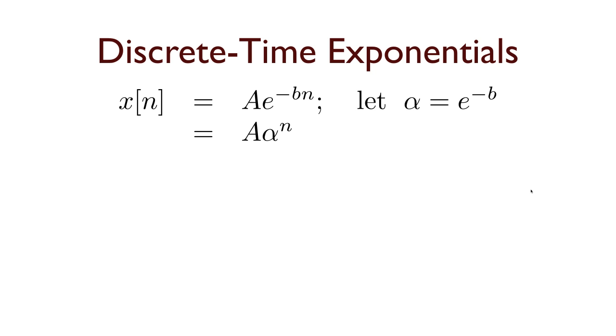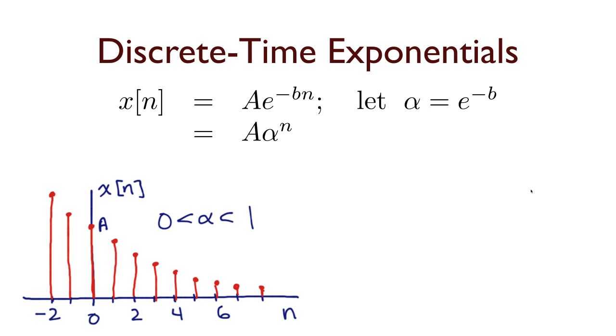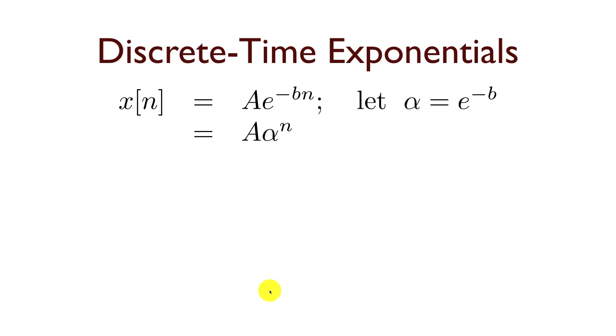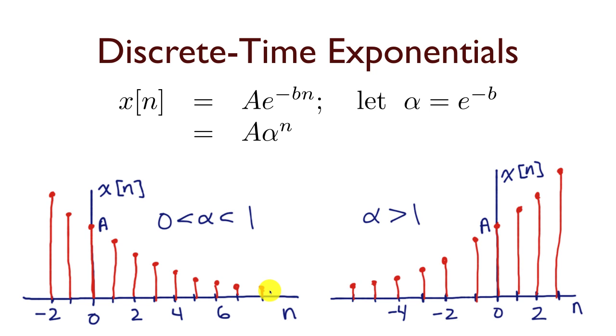But in this case, we're going to characterize how it behaves in terms of alpha. So, if alpha is a number between 0 and 1, then alpha to the n decays, or decreases, as n increases, and we get this sort of exponentially decreasing sequence. On the other hand, if alpha is greater than 1, we get an exponentially increasing sequence because I'm raising a number that's greater than 1 to powers.